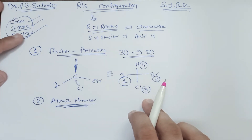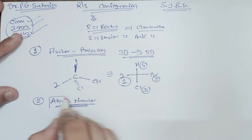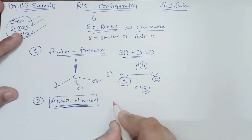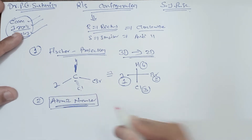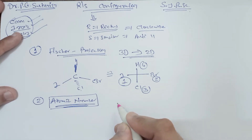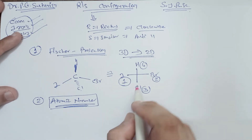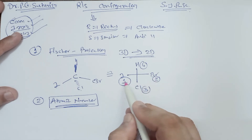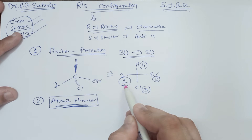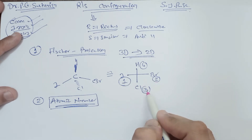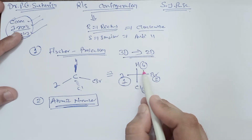The second rule involves atomic number priority: the atom with the greater atomic number gets higher priority. For example, if you have H, Br, Cl, and I — iodine gets the highest priority, then bromine second, chlorine third, and hydrogen fourth.